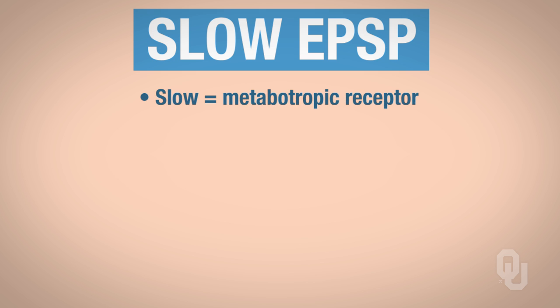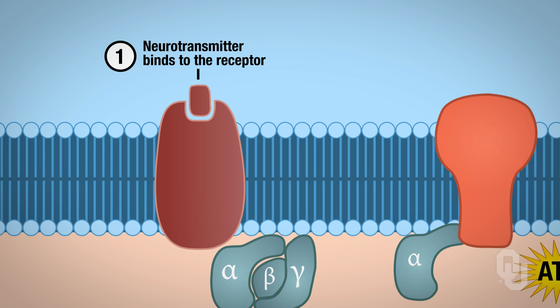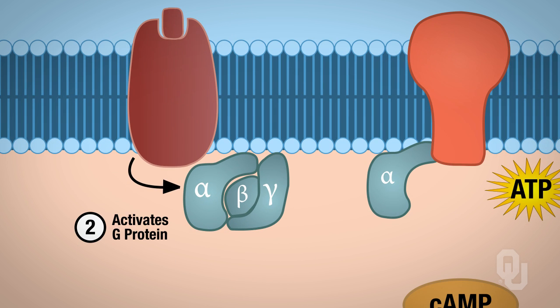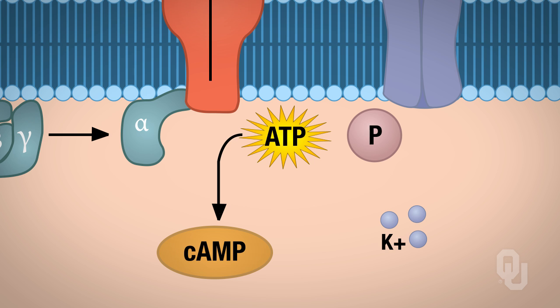Let's look at a slow excitatory postsynaptic potential. When you hear the term slow, automatically think metabotropic receptor and G-protein. The goal is the same: to depolarize the membrane. In step one, the neurotransmitter binds to your metabotropic receptor. In step two, we activate the G-protein — GDP falls off the alpha subunit, GTP binds to the alpha subunit, it slides over and we activate adenylate cyclase. Once adenylate cyclase is activated, we cause the conversion of ATP into our second messenger, so we produce cyclic AMP.